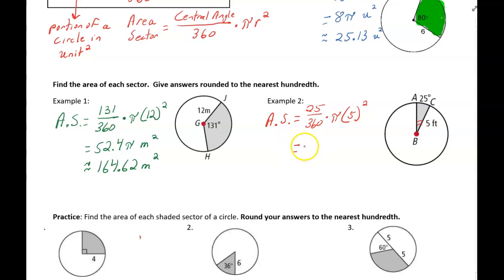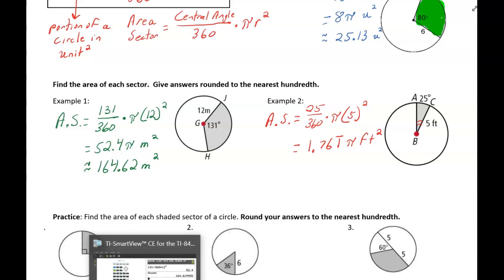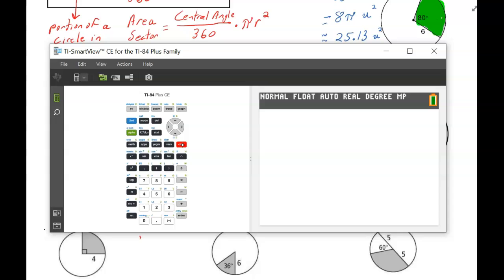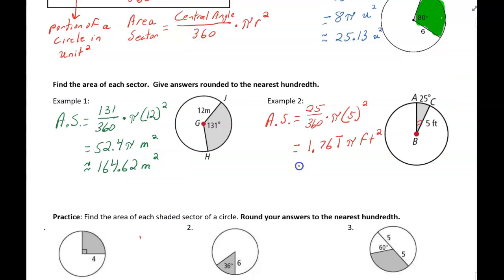I get this is equal to 1.76 repeating pi feet squared. And I'm actually going to type this into the calculator so you can see that. So it'd be 25 divided by 360 times 5 squared. So that's how I came up with that number. And then I'm going to say multiply by pi. So the answer is going to be 5.45 feet squared.